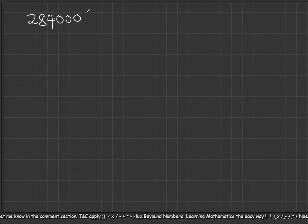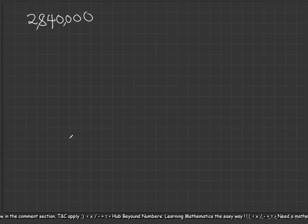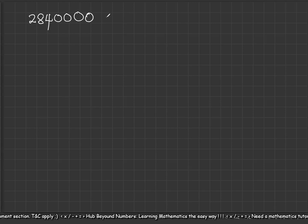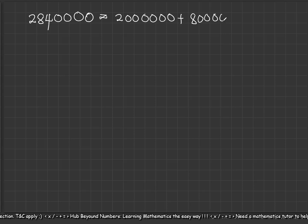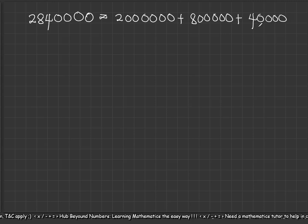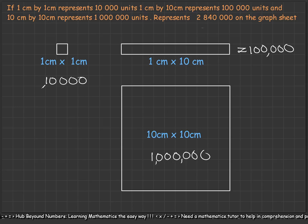With that said, our question is two million, eight hundred and forty thousand. We need to write it in a way that we can get all the scale units from it. As we've been learning, we first write it in expanded form: two million plus eight hundred thousand plus forty thousand.